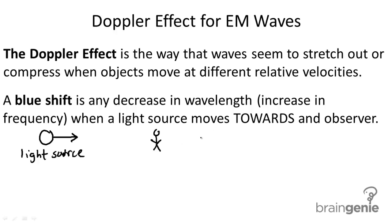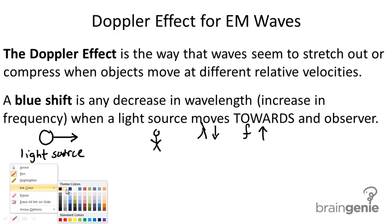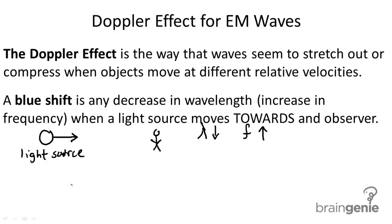What happens is the wavelength decreases and the frequency increases. The light that this observer sees shifts towards the blue end of the visible light spectrum, which has a higher frequency.